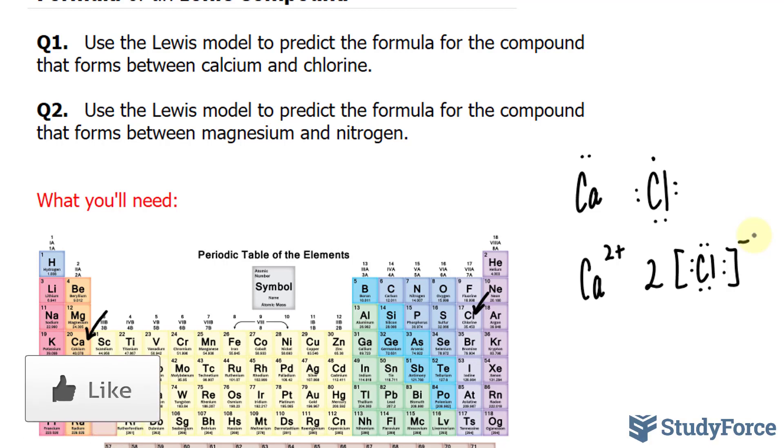Finally, you write the formula with subscripts that indicate the number of atoms. So we'll write down calcium chloride two.